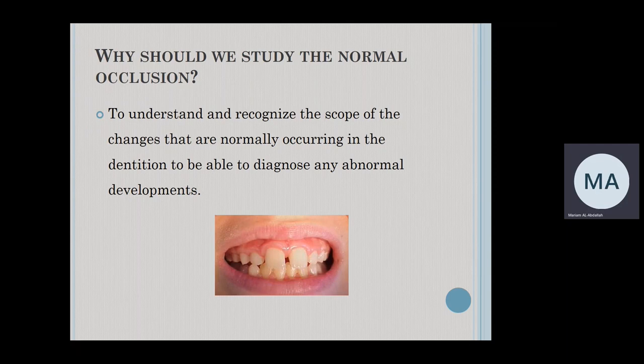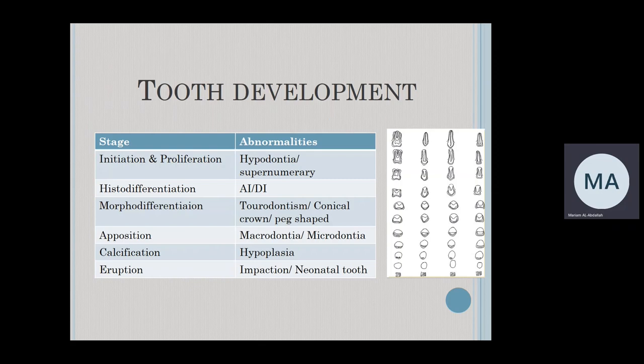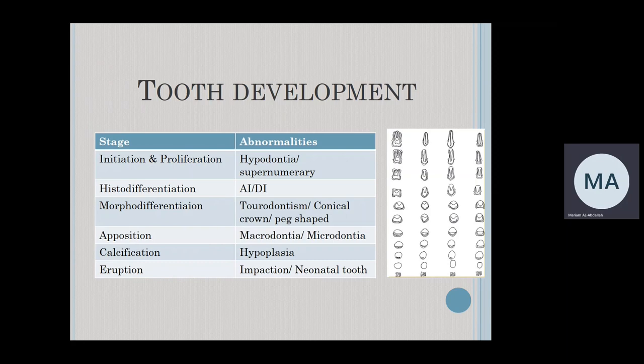For example, if you look at a patient's picture in the mixed dentition, you need to know that the spacing between the incisors is considered normal physiological development — you should not identify this as a feature of malocclusion. At different stages of the occlusion, we will have different features that are considered normal. If anything goes wrong at one of the different stages of tooth development, then we will have some dental abnormality that will occur.